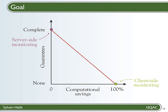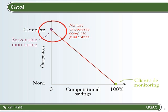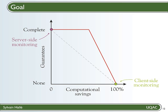So if we have a straight line between the two, this means that as soon as you want to achieve some computational saving on the server-side, you also have to surrender some of the guarantees, or alternately start trusting the client to some extent. If this is indeed the case, then we can't do cooperative runtime monitoring, because we want to save some computing on the server but still retain complete guarantees, as if the server checked everything by itself. However, if the curve has a plateau on the left, then it means that we can devise a way of offloading some processing to the client without having to start trusting it even the least bit. This is where there's potential for cooperation.